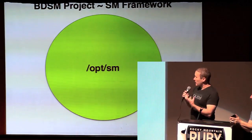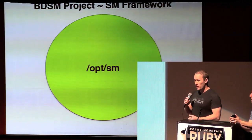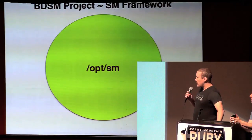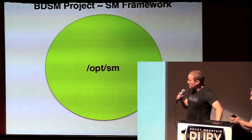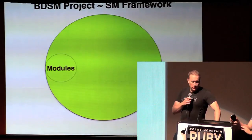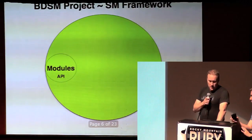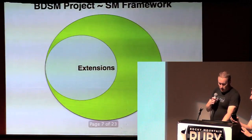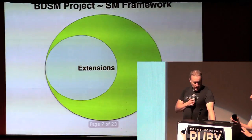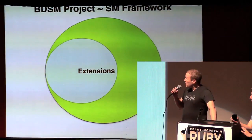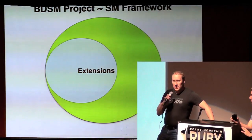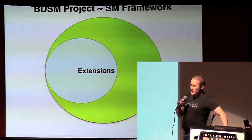So what it is: it's got a core to it. It installs to /opt/SM if you install as root by default. It's got a command line interface that it supplies to you. It has modules that it supplies as well — we'll get to those in a few minutes. And the modules have an API. And then the whole point to it is that it enables you to write extensions.